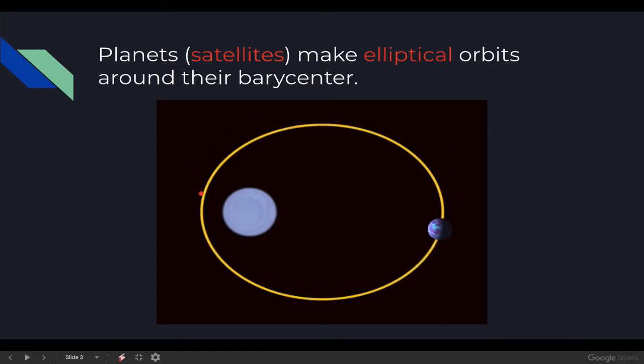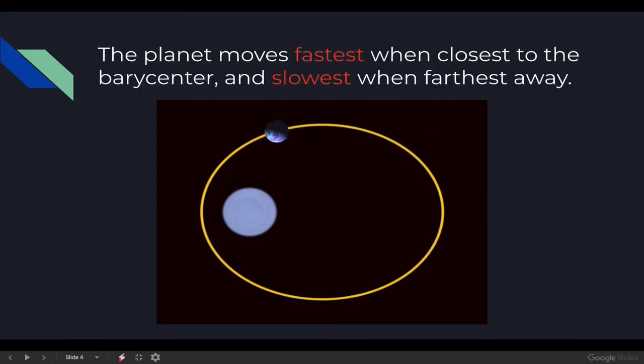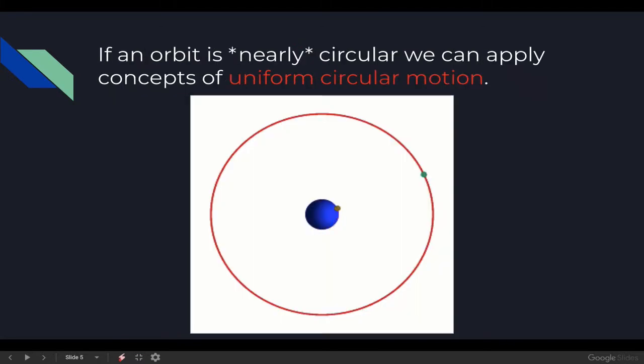It's not perfect circles. Instead, they are these oval-shaped ellipses. The second law of planetary orbit is that the planet or the satellite moves fastest when it's closest to its barycenter and slowest when it's farthest away. In order to connect the motion of a planet to the ideas that we learned in our first lesson, the orbit needs to be circular or nearly circular, because then we can apply these concepts of uniform circular motion and centripetal acceleration.